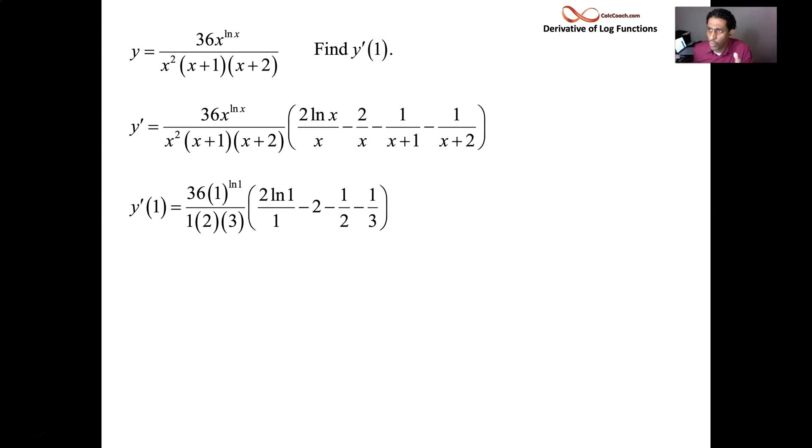1 raised to the natural log of 1. The natural log of 1 is equal to 0. So, 1 raised to the 0, that's a 1. This numerator is 36. It's divided by a 6, a 1 times a 2 times a 3. So, our function, original function, when we plug a 1 in, we end up with 36 over 6, or 6.